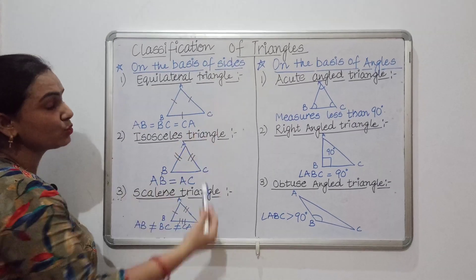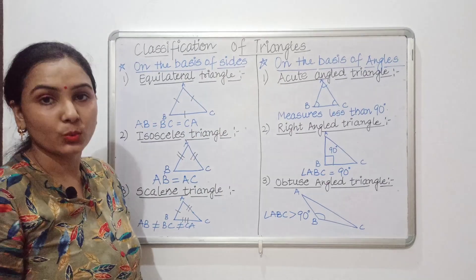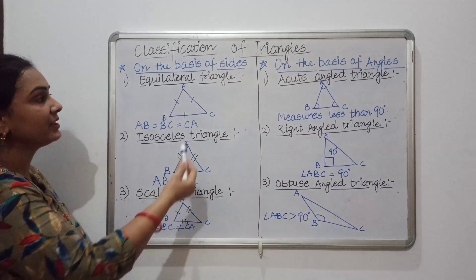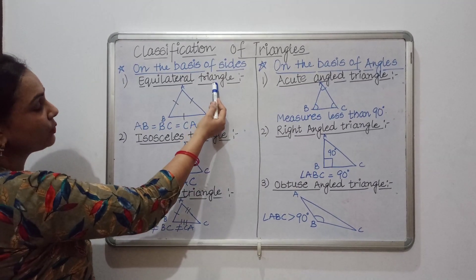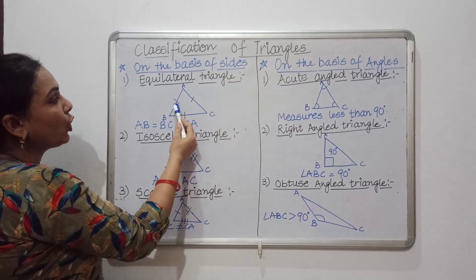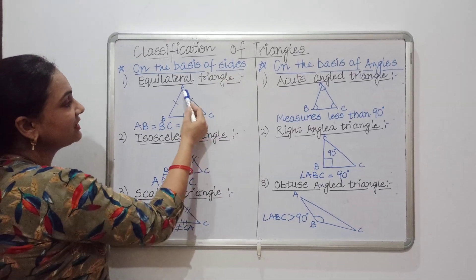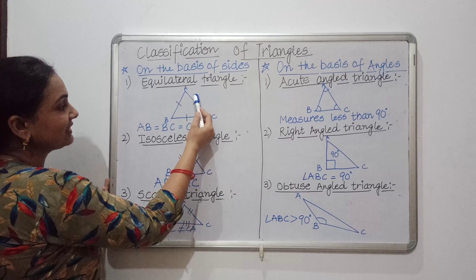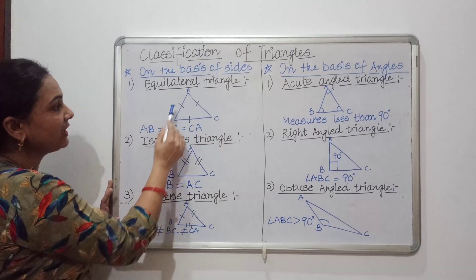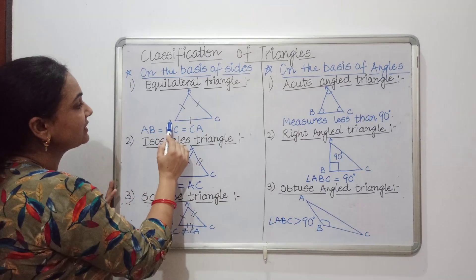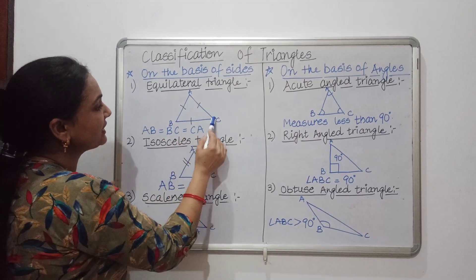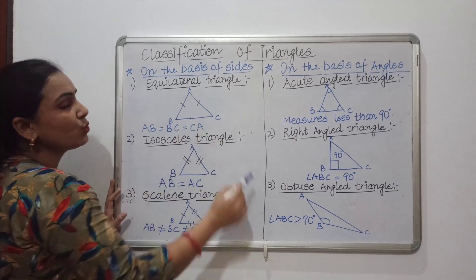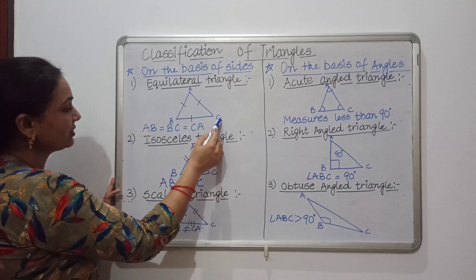First of all, we will talk about equilateral triangles. Here in the equilateral triangle, all three sides are equal. We can see here that AB is equal to BC, and BC is equal to CA.